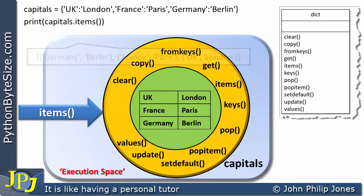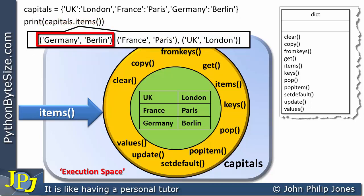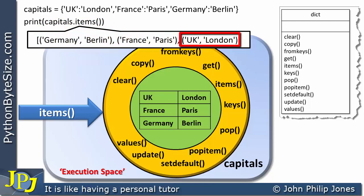The items are returned as pairs, as you can see here: Germany/Berlin as one pair, France/Paris as another pair, and UK/London as another pair. Now, these pairs in Python are examples of tuples — or tuples, depending on how you decide to pronounce the word.